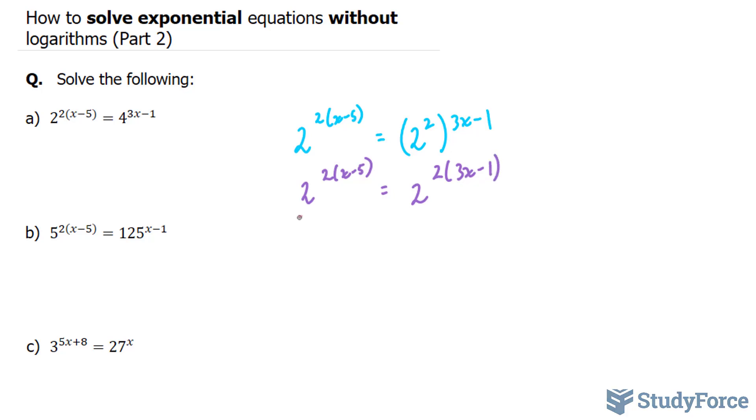Notice that the bases here are the same. And just like in part 1, when the bases were the same, you can make the exponents equal to each other. By making the exponents equal to each other, we can solve for x. The exponents are 2 bracket x minus 5, and this one is 2 bracket 3x minus 1.